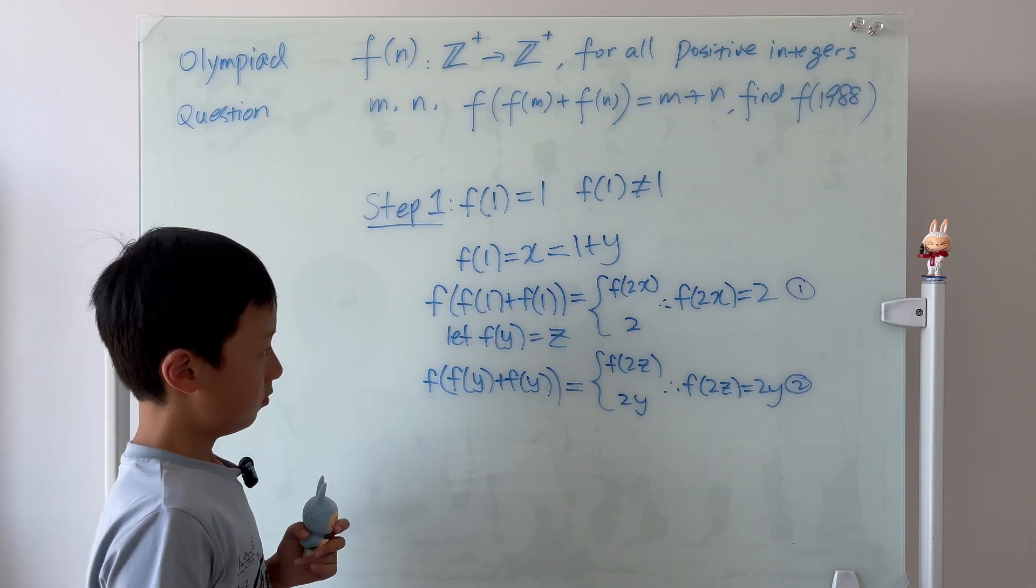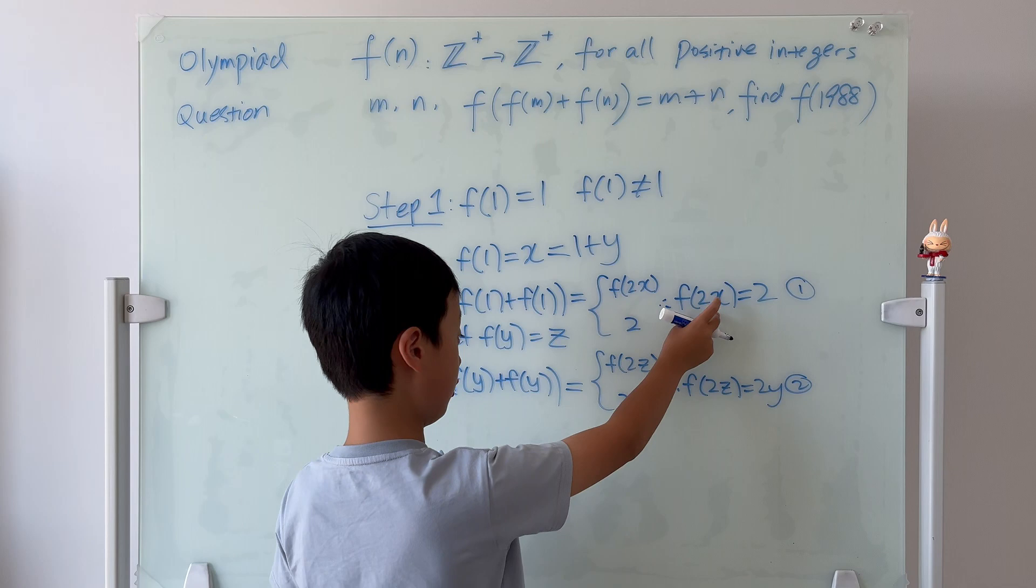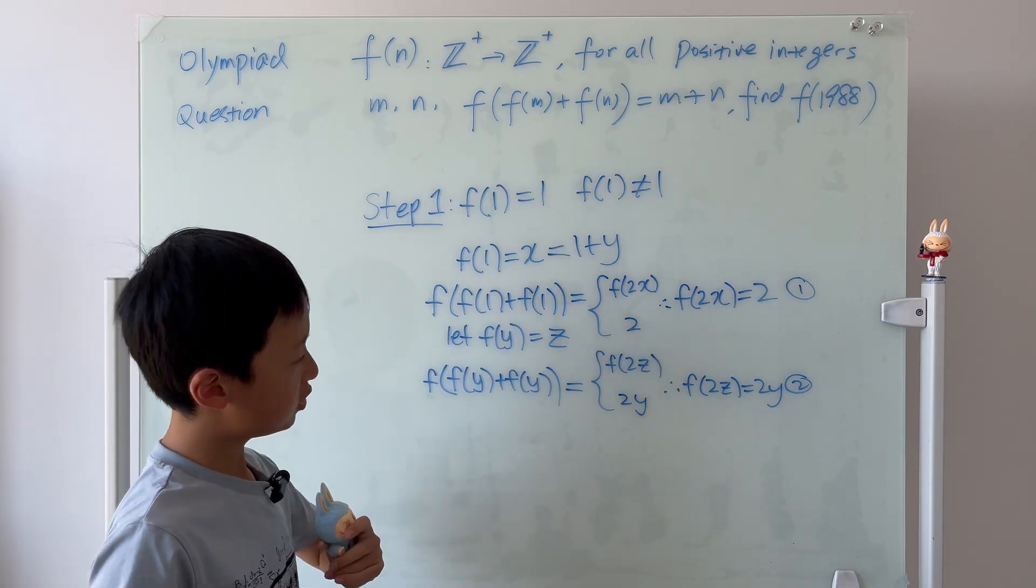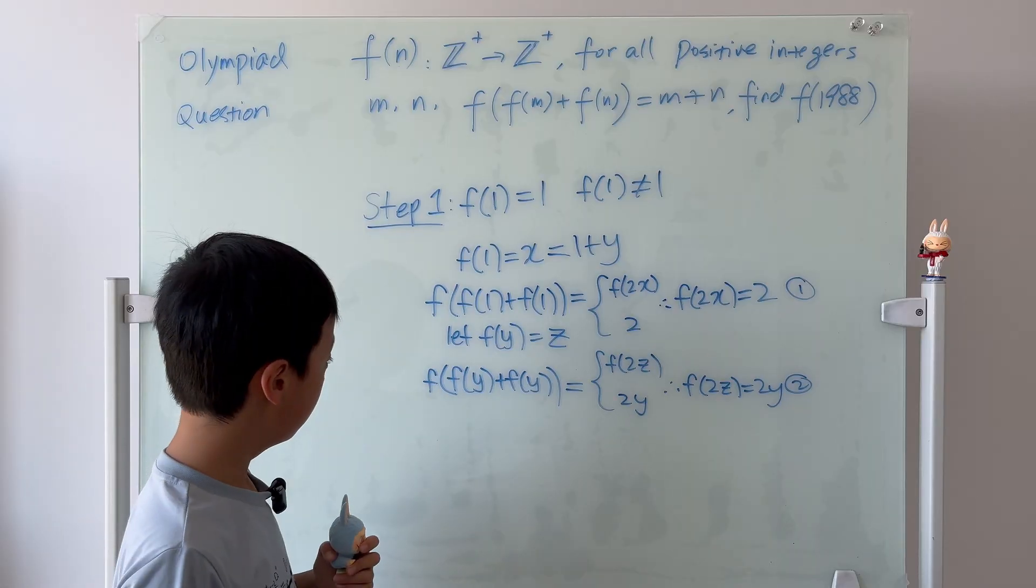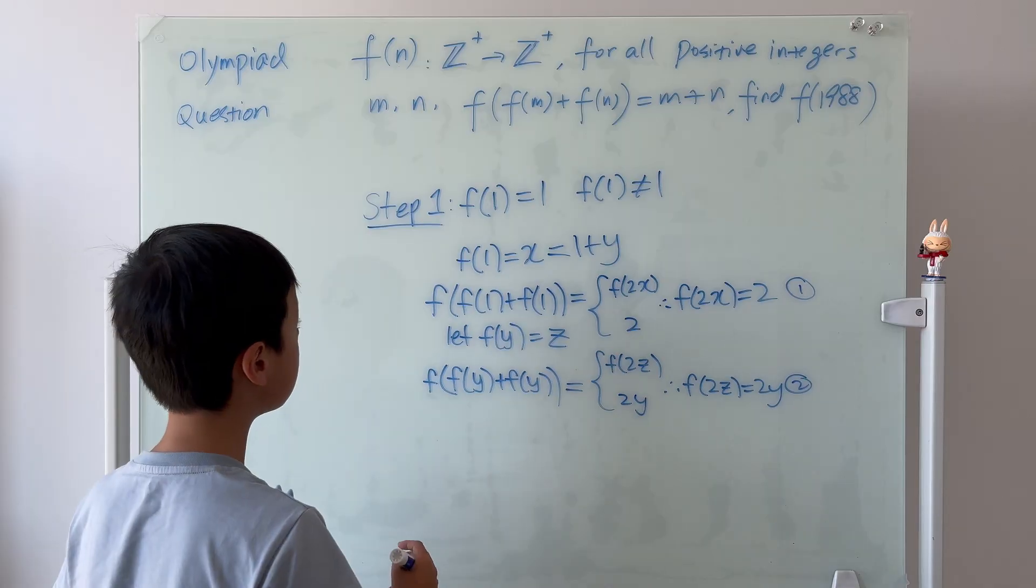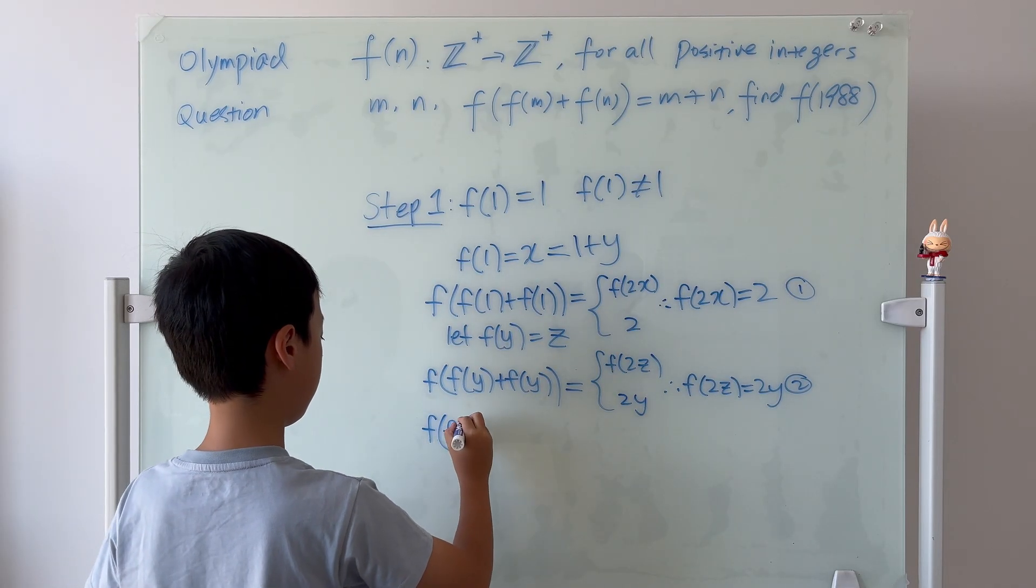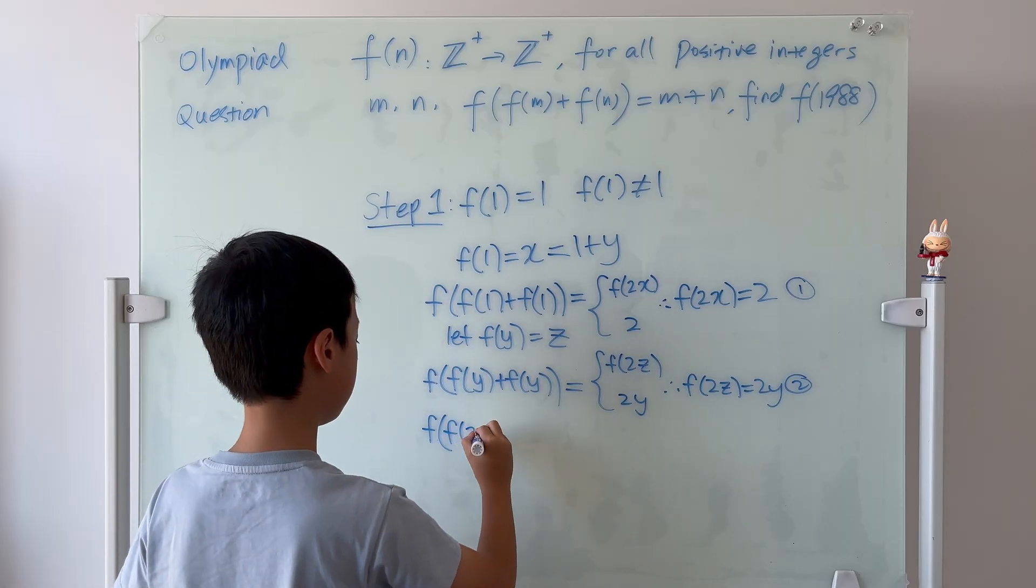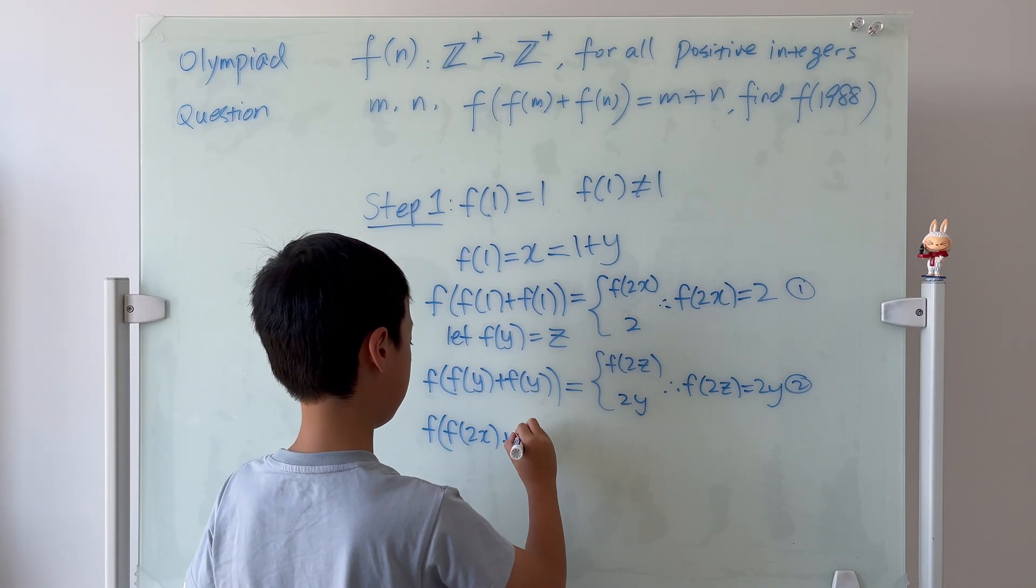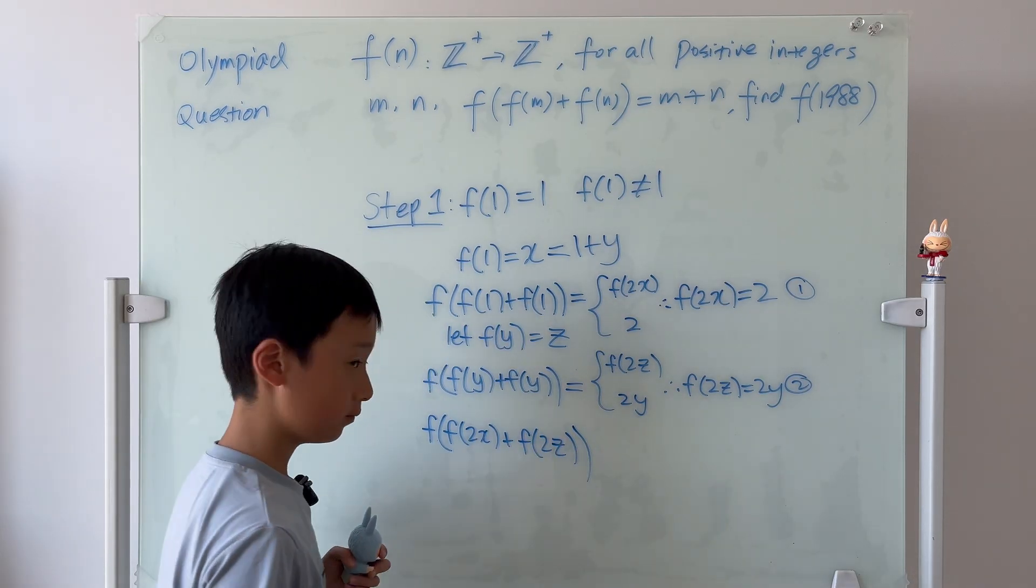Well, look. Look at equation 1 and 2. We have f of 2x and f of 2z. We have two functions here. So, what do you think of? Well, why don't we just try to plug these two in and see what happens? f of f of 2x plus f of 2z. All right.